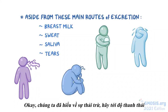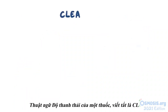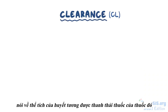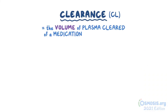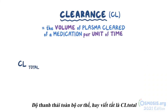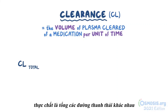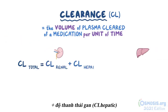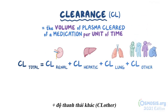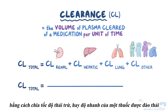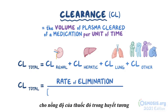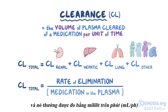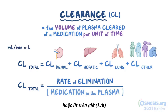Now let's look at clearance. The clearance of a medication, abbreviated as CL, refers to the volume of plasma cleared of a medication per unit of time. Total body clearance, or CL total, is a sum of the various clearance routes: renal clearance plus hepatic clearance plus lung clearance plus other clearance. It can be calculated by dividing the rate of elimination by the concentration of that medication in the plasma, and is usually measured in milliliters per minute or liters per hour.